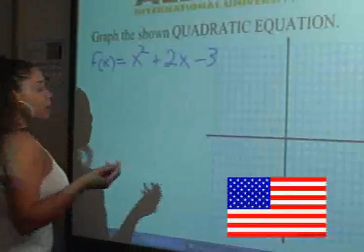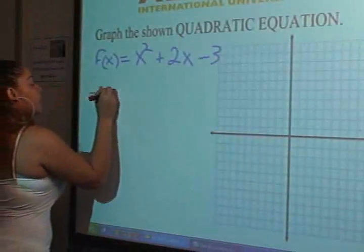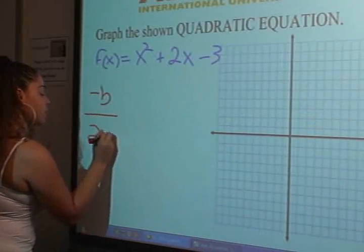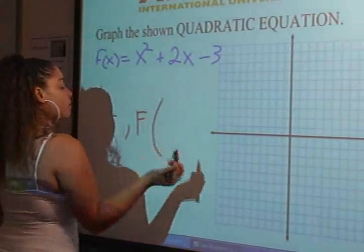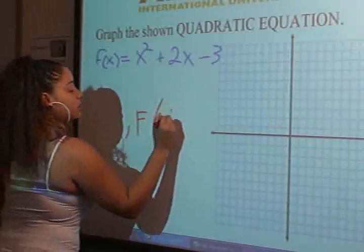So first step, why don't we go ahead and try to find the vertex? By doing that, you are going to use this formula, negative b over 2a, and then the function of that number you're going to put back into the equation.